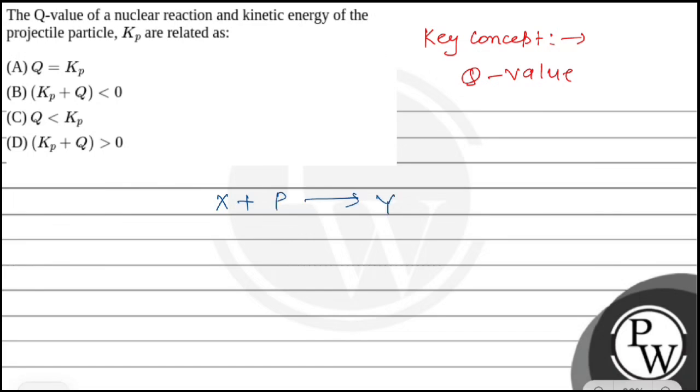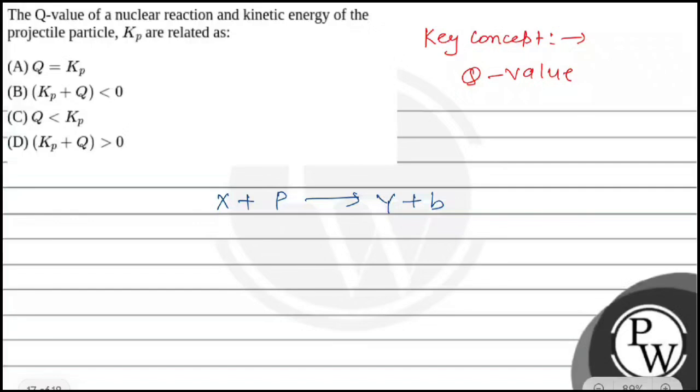going to Y plus b. So the Q-value for this reaction is: energy of products, that is Ky plus Kb, minus energy of reactants, that is the energy of the particle Kp.